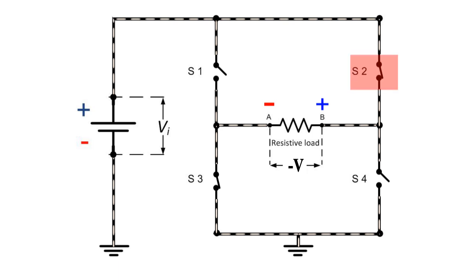If S2 and S3 are turned on, the reverse will happen. The load gets energized in the reverse direction. This time voltage across the load can be represented by -V.